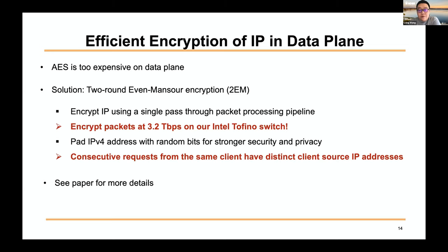We also pad IPv4 addresses with 32 random bits and rotate encryption keys for better security. The random padding means all packets from the same client have different source IPs. To clarify: 2EM is not as secure as AES, but it is sufficient for our application because it is hard to break under protocol constraints. For example, recovering 64-bit plaintext requires an attacker to send more than 1 trillion DNS requests per second, collect ciphertexts over several key periods, and requires 2^98 bits of memory.